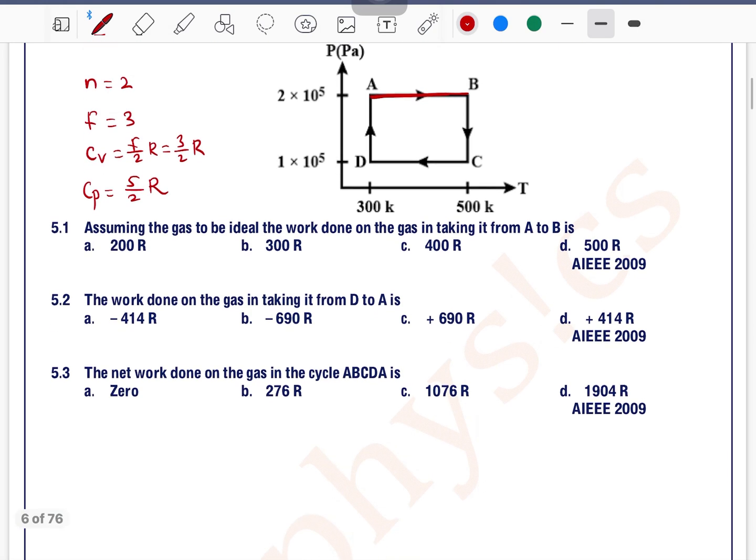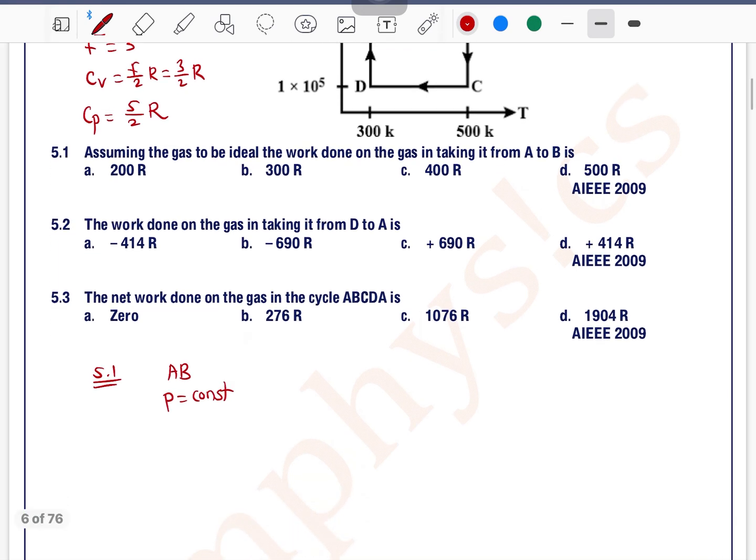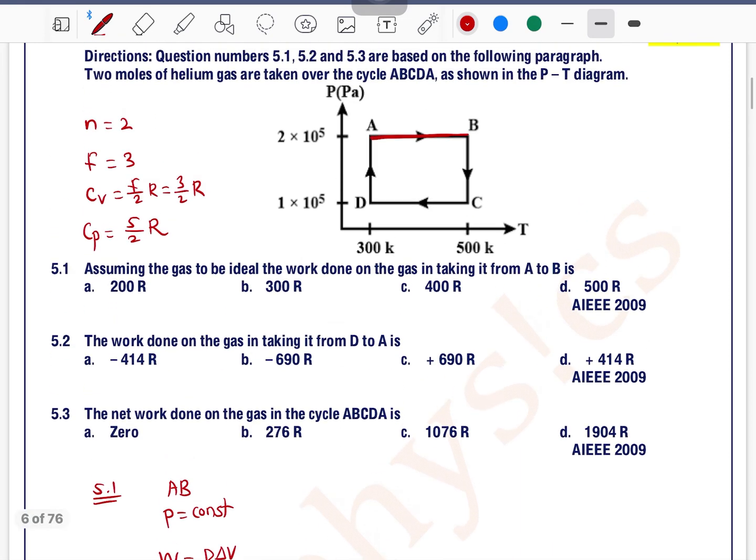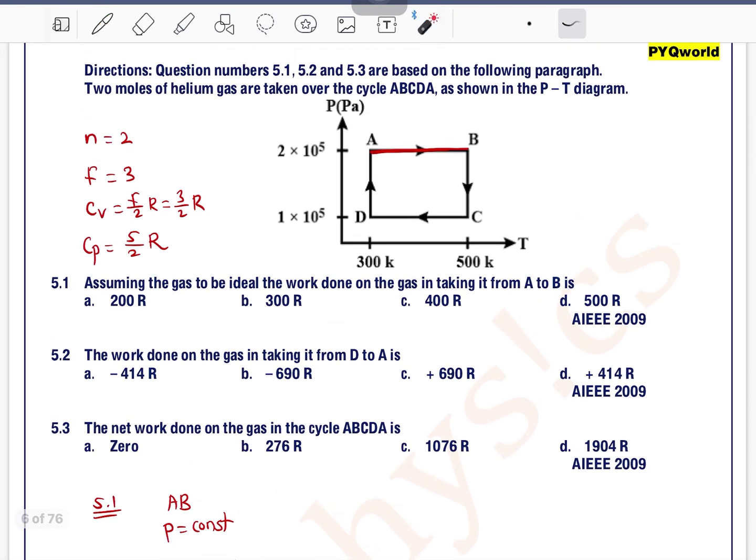5.1, it is asked: assuming the gas to be ideal, find the work done on the gas in taking it from A to B. The process A to B—in process AB, pressure is constant, so it is an isobaric process. In the case of an isobaric process, we know